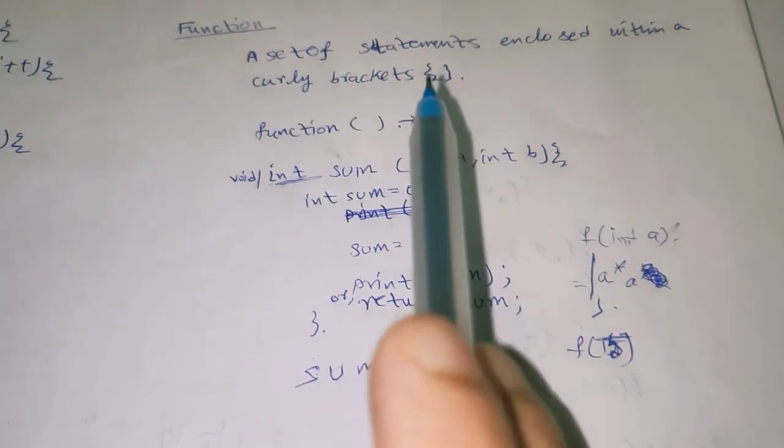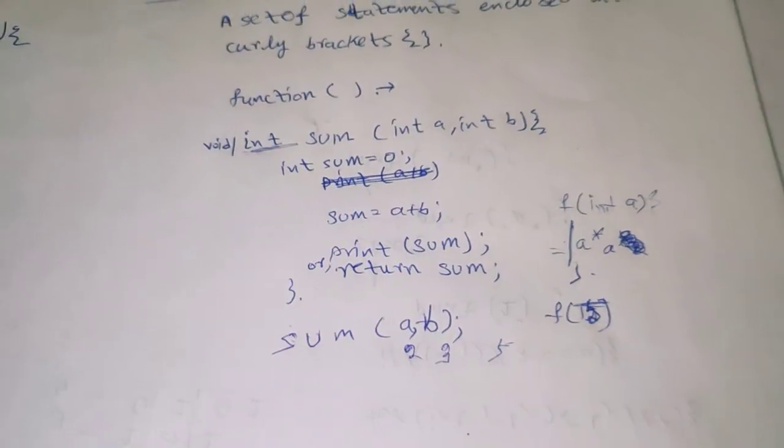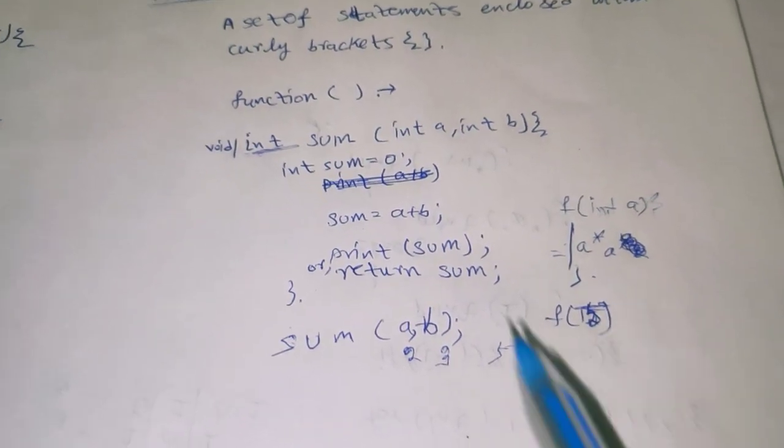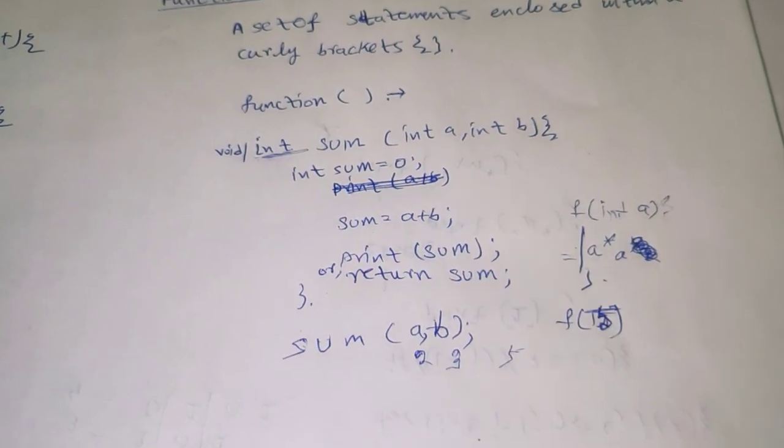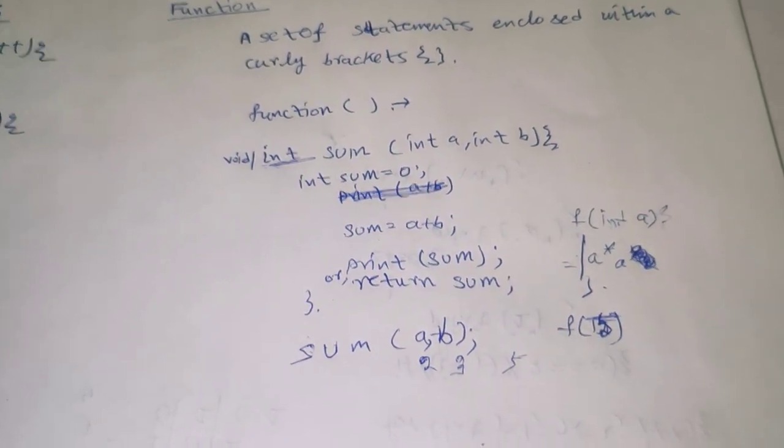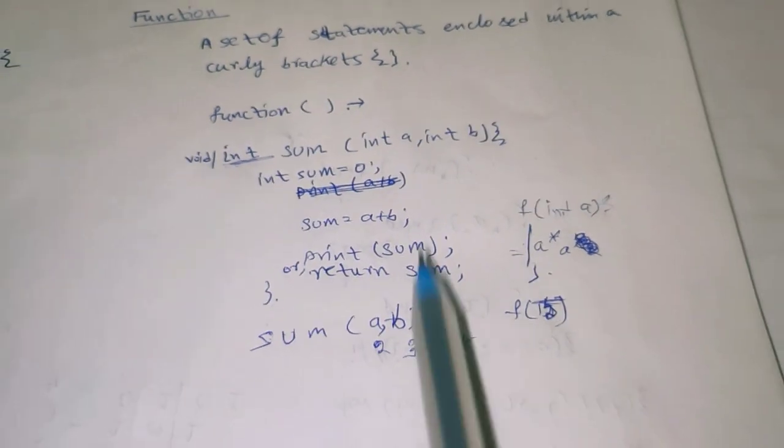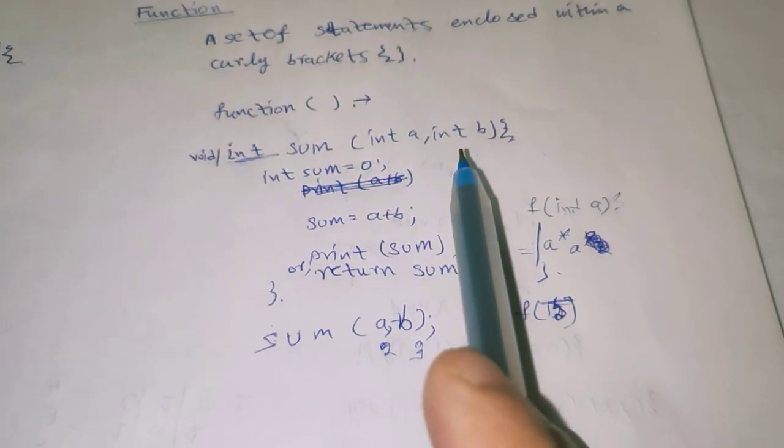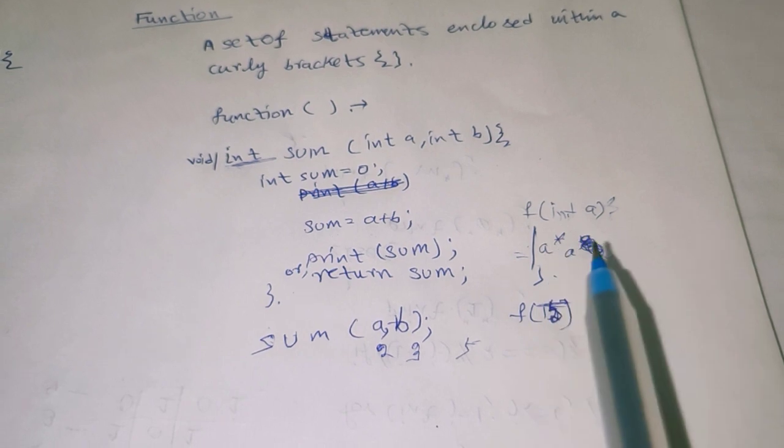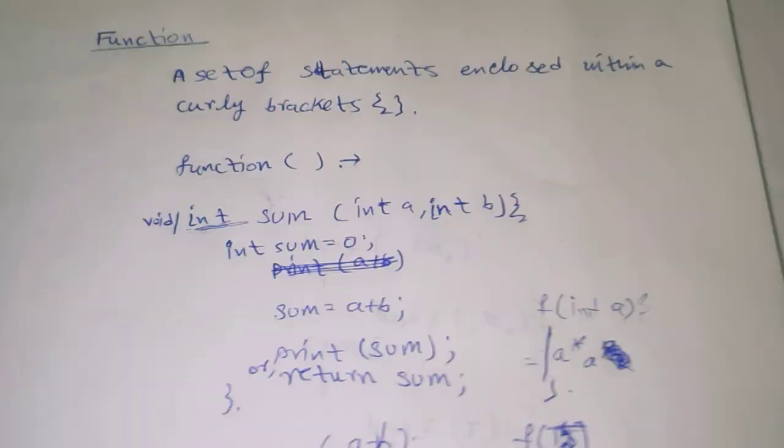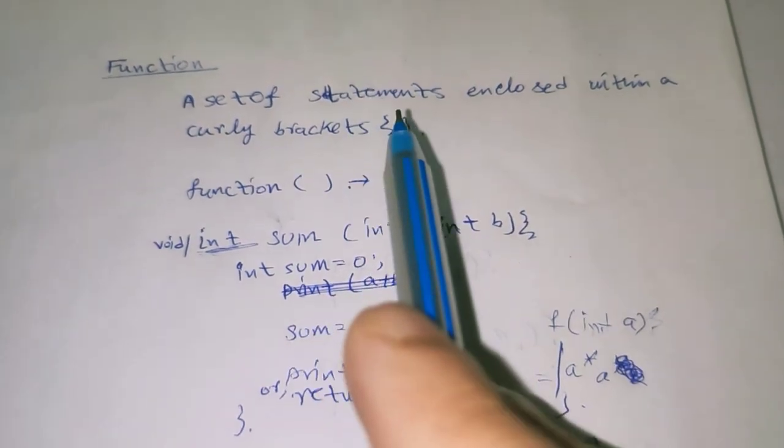A function should be declared with no arguments or a variable number of arguments. Here we are using two arguments or only one argument. When we require to perform a specific task, we require a function.